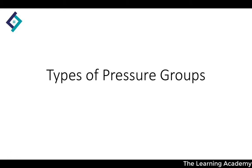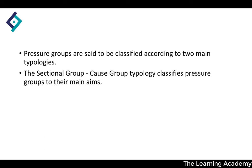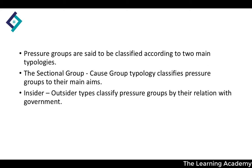In this video, we're going to look at the different types of pressure groups and how we can group pressure groups into different categories. Pressure groups are classified according to two main typologies: the sectional group/cause group typology, which classifies pressure groups by their main aims, and the insider-outsider typology, which classifies them by their relations with government.